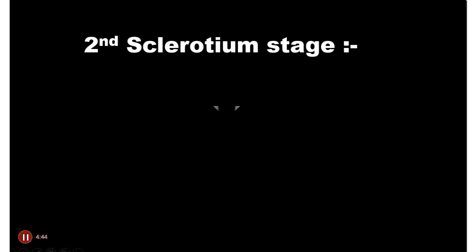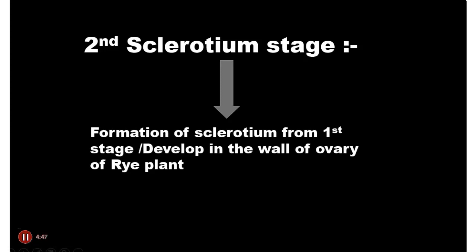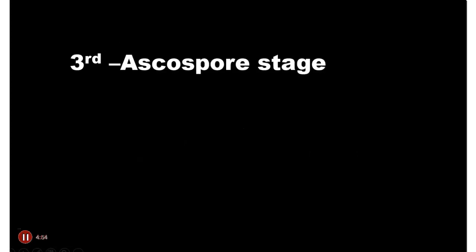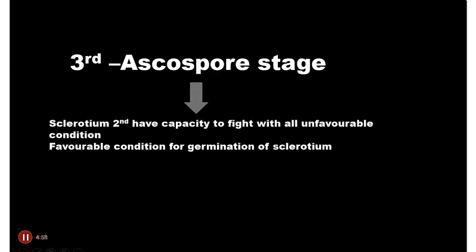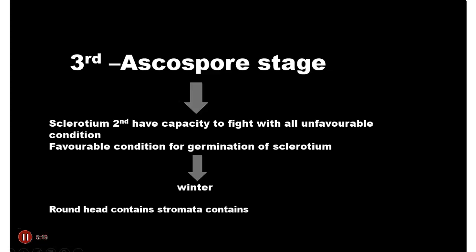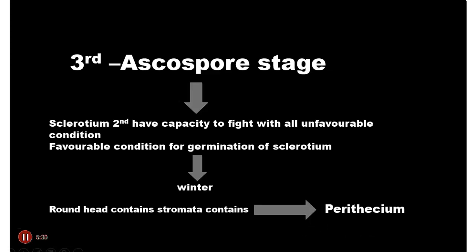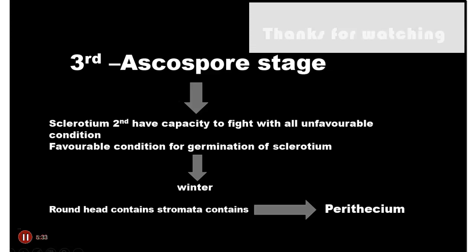The second stage is the Sclerotium stage. Sclerotium forms from the first stage, developing in the wall of the ovary of the rye plant. The sclerotium has the capacity to survive unfavorable conditions. Favorable conditions for germination of sclerotium occur in winter. The sclerotium forms a round head containing stomata, called the perithecia, as I have already shown.